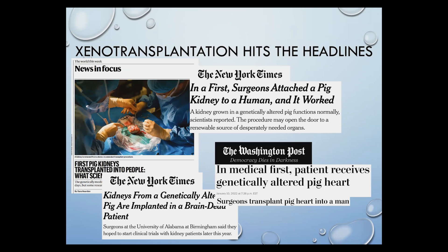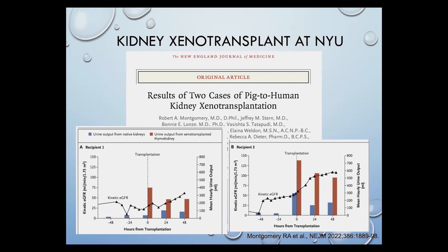Xenotransplantation has been hitting the headlines for the past year with several breakthrough xenotransplants — both kidney and heart from pigs to humans. Centers including NYU, University of Alabama, and University of Maryland have been part of this race. A recently published New England Journal of Medicine article summarized NYU's experiences with kidney xenotransplants performed in September and November 2021. These two kidney xenotransplants had no acute rejection and no antibody-mediated rejection, meaning the human body successfully accepted the pig organs.